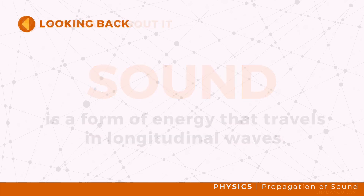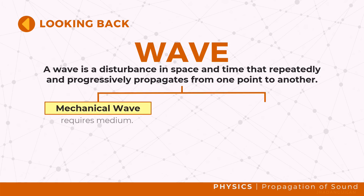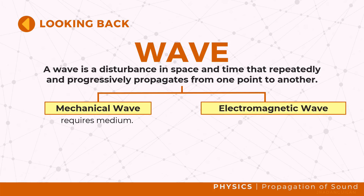A wave is a disturbance in space and time that repeatedly and progressively propagates from one point to another. The two most common types of wave are mechanical waves, which are responsible for the transfer of energy through a medium, and electromagnetic waves, which do not require a medium to travel.